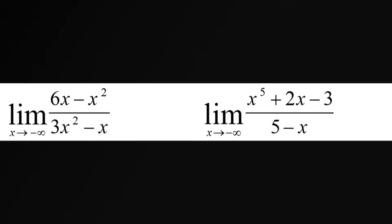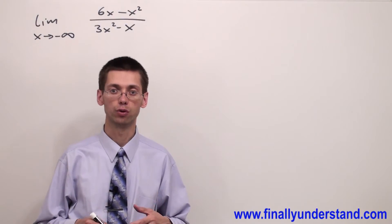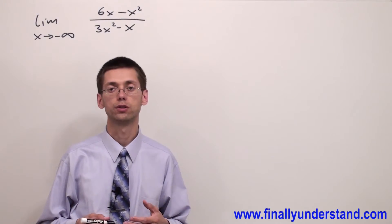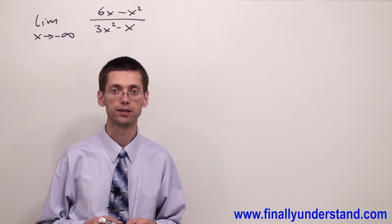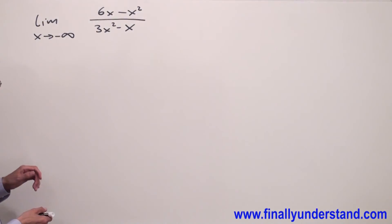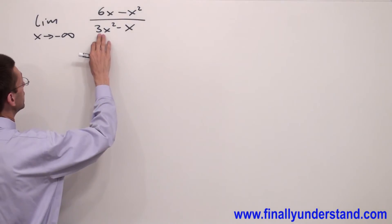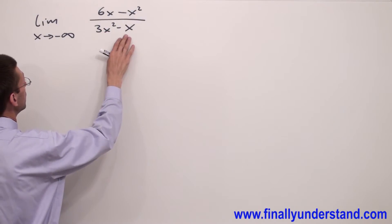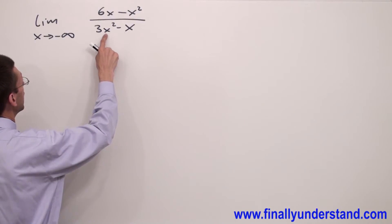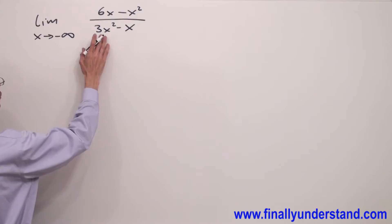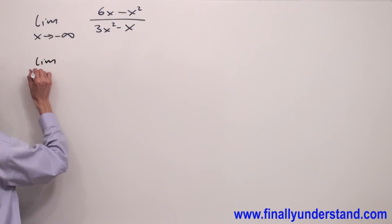This time we're supposed to find the limit with x going to negative infinity, but the way we're supposed to solve this problem is exactly the same as for the limit with x going to positive infinity. We look at the denominator — the polynomial has the variable with the highest exponent x squared — that's why we divide the numerator and denominator by x squared.